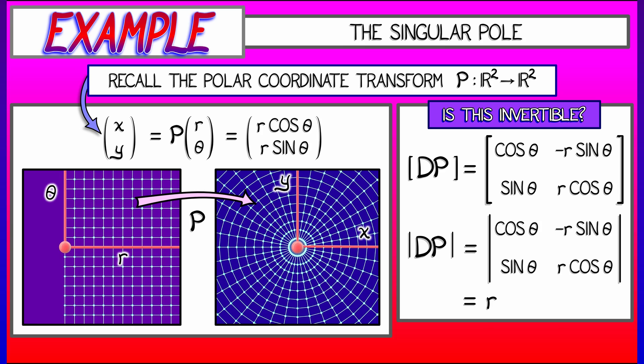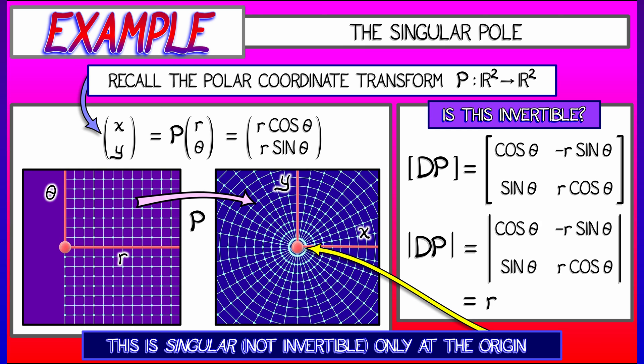Now, when is this zero? When is it non-zero? This vanishes only at the origin, where x and y are zero. And you can see that.